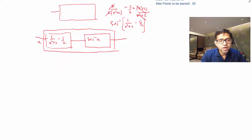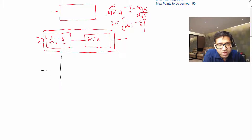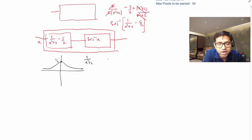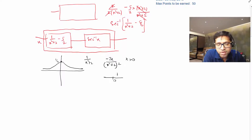Looking at the function 1/(x² + 2): at x = 0 it has value 1/2. It has symmetry about the y-axis. Taking its derivative — the denominator is (x² + 2)², and the derivative is completely negative for positive values of x, making it a decreasing function for positive x and increasing for negative x.